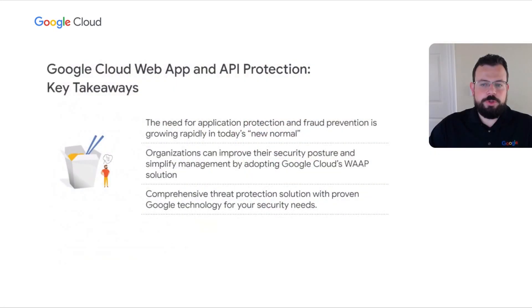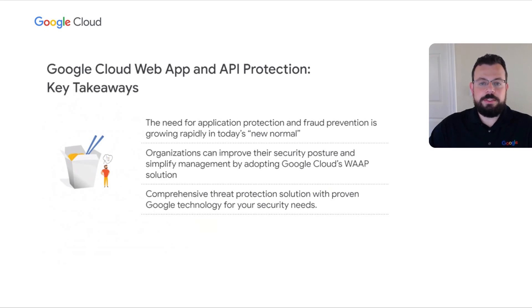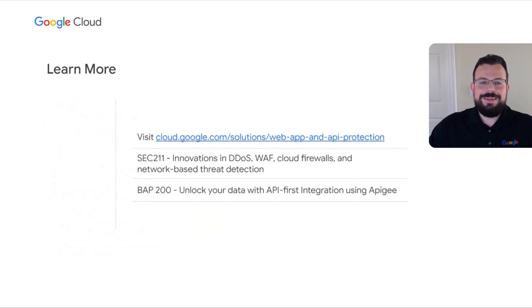Thanks, Mo Salah. It's an honor to be able to work with you and ATB Financial to help you accomplish your application protection objectives on Google Cloud. To sum up, the need for application and fraud prevention is growing more acute in the face of increasing application complexity and an evolving threat landscape. Google Cloud's WAP solution spans DDoS, WAF, bot, and fraud, as well as API protection, offering a cohesive and integrated experience, leveraging the technology, hardware, and software we developed to protect Google's own billion-user properties, as well as millions of external websites. To learn more, please visit the WAP website linked here or tune into the additional breakout sessions to learn more about network security, Cloud Armor, as well as Apigee. Thank you for joining us today. Don't hesitate to reach out to learn more.